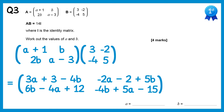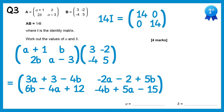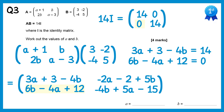We're told this matrix is equal to 14I, where 14I is just the identity matrix with 14 on the diagonals instead of 1. Comparing the top left elements: 3a plus 3 take 4b must equal 14. Comparing the bottom left elements: 6b take 4a plus 12 must equal 0. So we write down these two simultaneous equations.